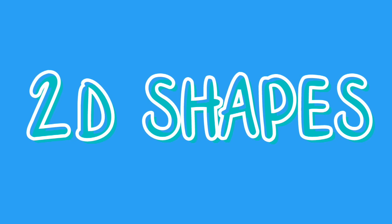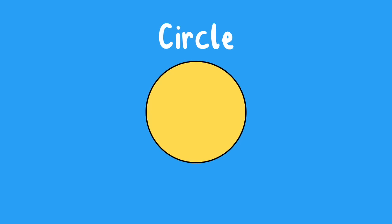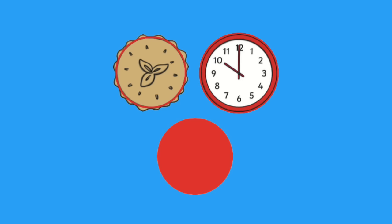Now, let's take a look at some 2D shapes. Circle. Circles only have one side and no corners. Here are some real-life examples.